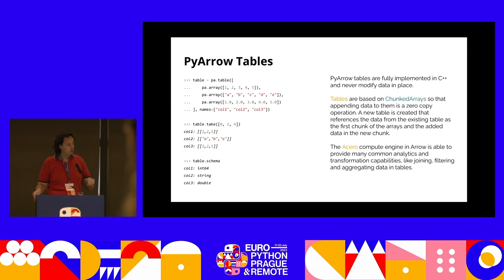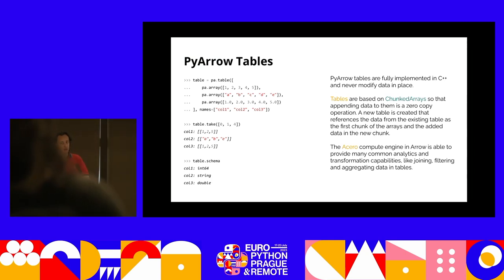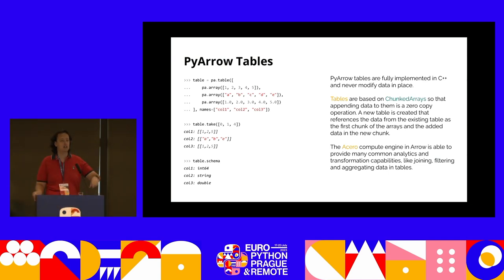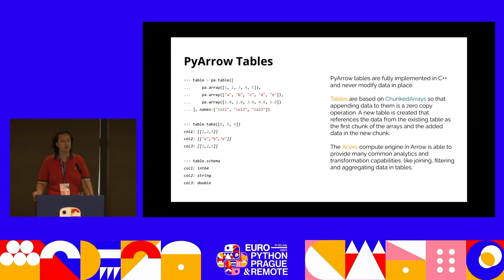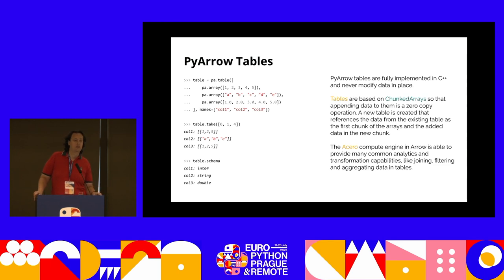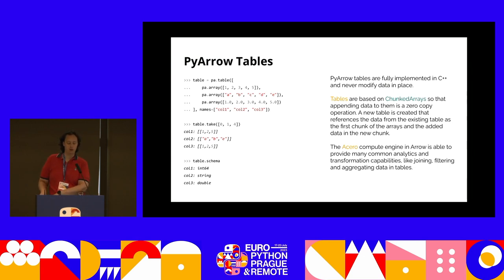You create a table from a set of columns by assigning a schema — the schema is just names and types, though the types are already known by the arrays themselves. The key benefit is that if you represent your data in Arrow arrays or Arrow tables or record batches, you will be able to share data across different libraries without incurring any cost of conversion.